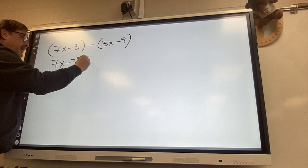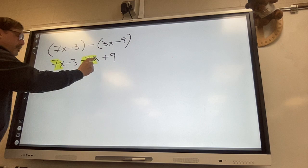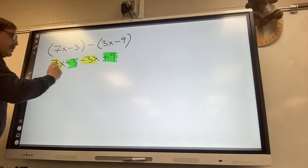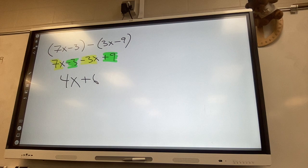X negative times negative makes that a plus nine and then we go ahead and once again the things that are common will be combined. You have seven you lost three you still have four. You lost three you gain nine you're up six. So that was some of the start of this of this unit.